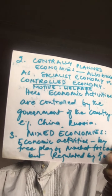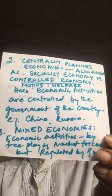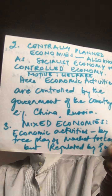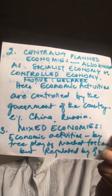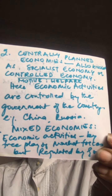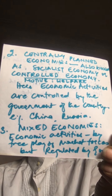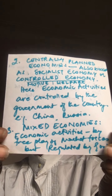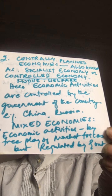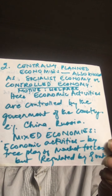The second type is the centrally planned economy. Examples that come to mind are Russia and China. These are economies where economic activities — production, consumption, exchange, etc. — are controlled by the government or some central authority. Economic decisions are driven by the motive of social welfare, not private profit, because the goal is to bring society up to a certain level. Most resources are owned by the government, and the government decides at what price goods are to be sold in the market.